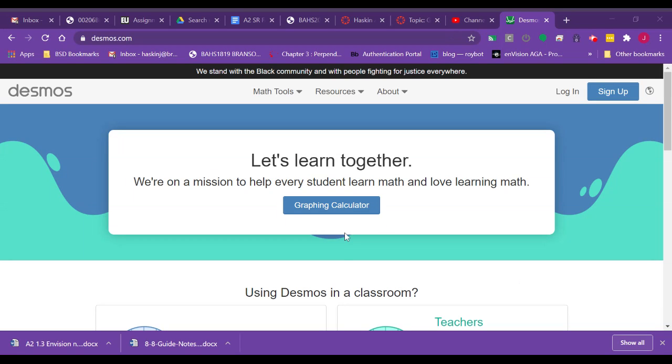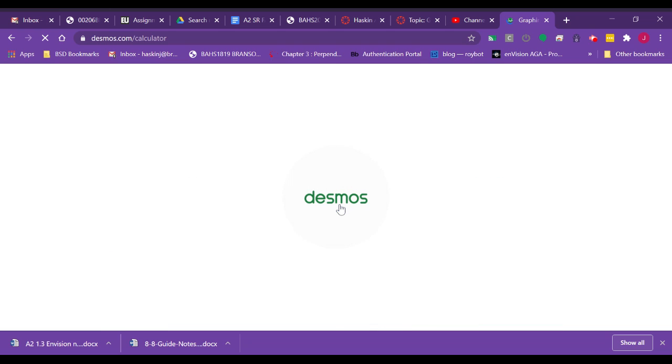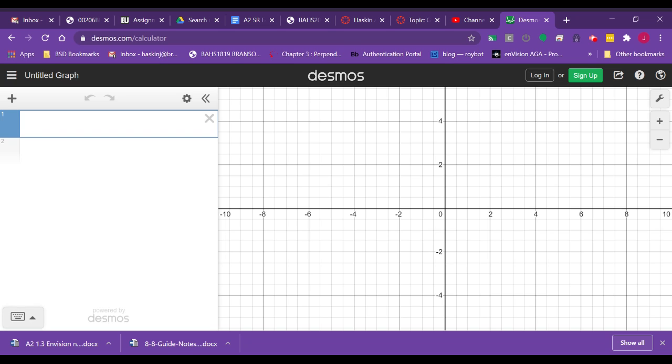So if you go to Desmos.com, this is the homepage. You just click here where it says graphing calculator, and your graphing calculator is going to pop up and load for you. So here's where everything's going to graph. Over here on the left-hand side is where we're going to enter our functions.